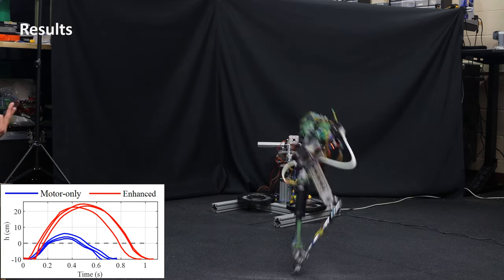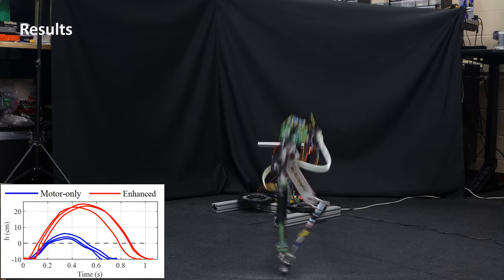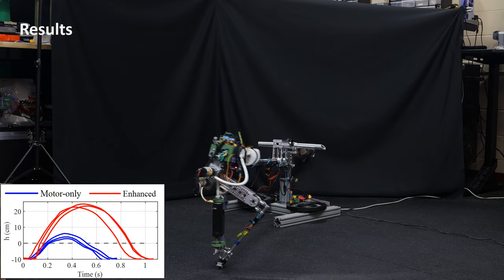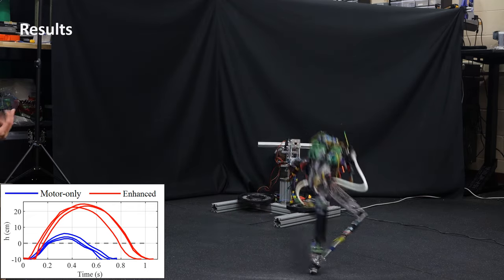With the pneumatic augmentation, the robot can increase its hopping height to an average of 23.4 cm. This is equivalent to a power amplification per cycle of around 5.4 times.